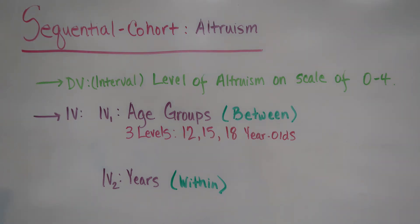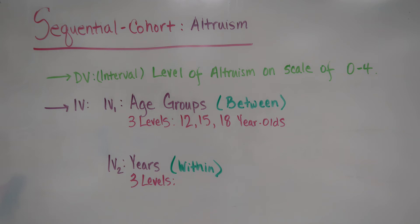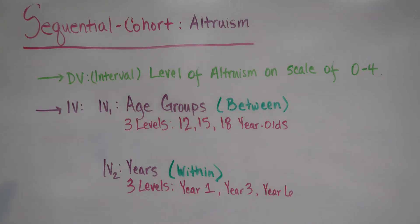Our second independent variable, within subjects grouping, each sample is measured three times over various levels. They're measured every three years, starting with year one, year three, and then finally year six.